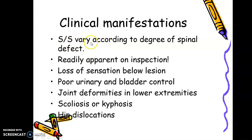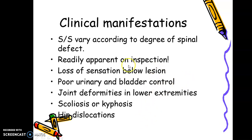Clinical manifestations: signs and symptoms vary according to the degree of spinal defect, which is readily apparent on inspection. These include loss of sensation below the lesion, poor urinary and bladder control, joint deformities in the lower extremity as the lumbar plexus is affected, and either spastic or flaccid involvement of the lower limb. Scoliosis or kyphosis as musculoskeletal deformity, and hip dislocation due to hip dysplasia may also occur.